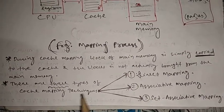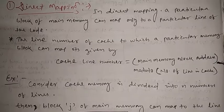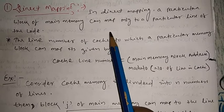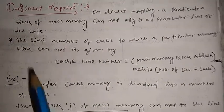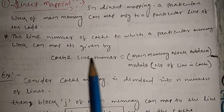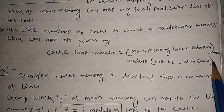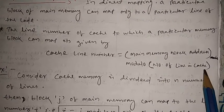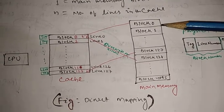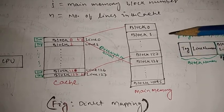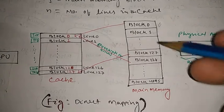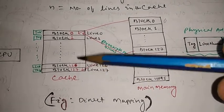Now we will discuss the different types of mapping techniques. First: direct mapping. In direct mapping, a particular block of main memory can map only to a particular line of the cache. The line number of the cache to which a particular memory block maps is given by: cache line number = main memory block address modulo number of lines in cache. Here is a diagram: this is the CPU, this is the cache memory, and this is the main memory. Assume main memory has 4096 blocks — block 0 to block 4095.